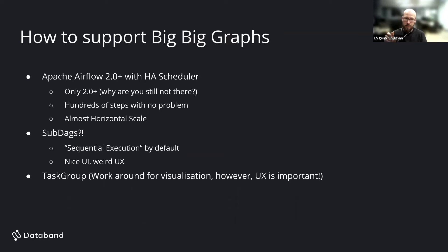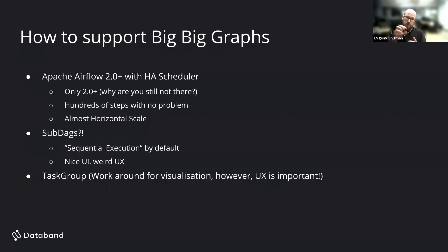A previous solution was SubDAGs, which still exist but by default run sequential execution — be careful with that. They provide a nicer UI but the execution and user experience isn't ideal. The better solution is Task Groups — a new feature to group big graphs in your main graph representation. It helps manage large graphs significantly.